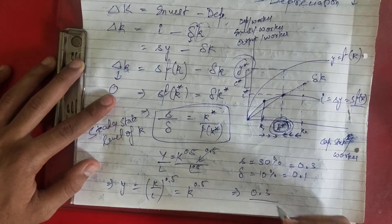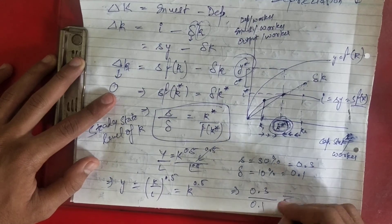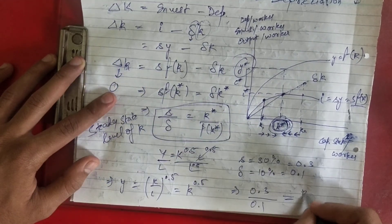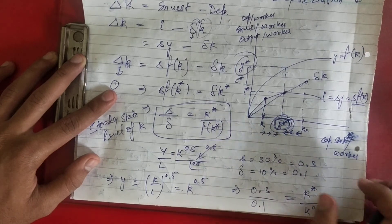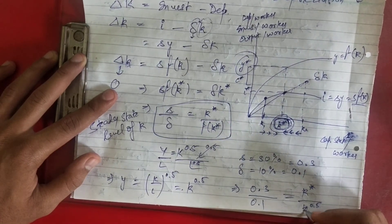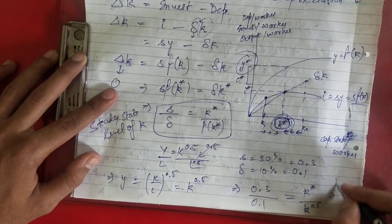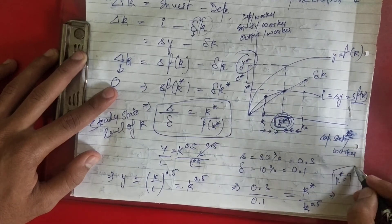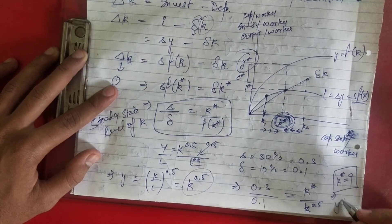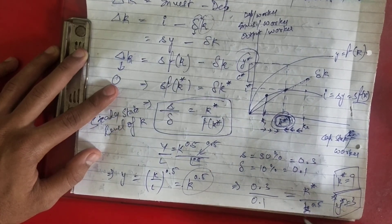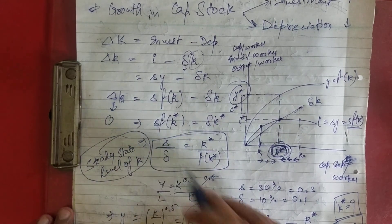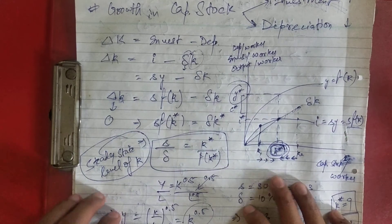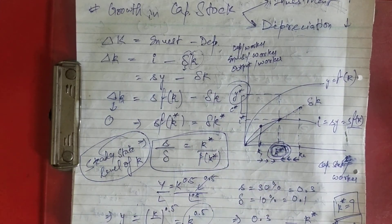Solving, we get k* = 9. Substituting k* back into the production function gives y* = 3. This numerical example illustrates the steady state level of capital, which is an important and fundamental topic. In the next class we will see how savings affect growth. Thank you for watching!